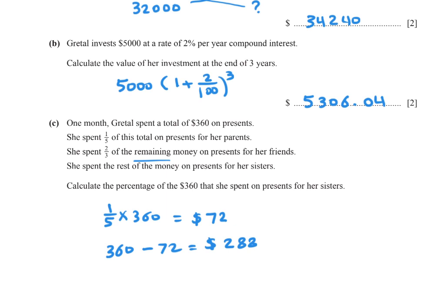She spent 2/3 of the remaining money on presents for her friends: 2/3 times 288 equals $192.